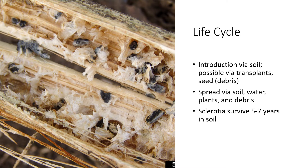From there the fungus will spread by any means that the sclerotia can move around — tractor implements, muddy shoes, or any kind of tools. Anytime water carries soil particles from one area to the next, or infected plants or debris move these fungal structures from one place to another, spread can occur.